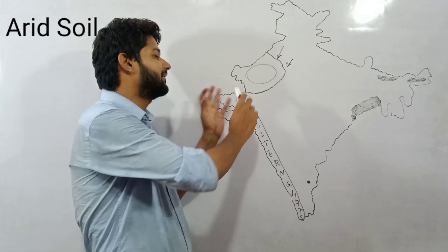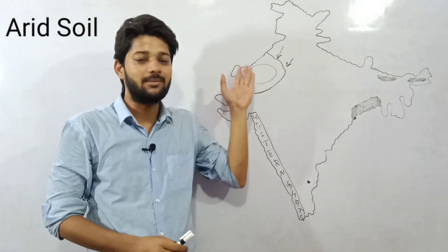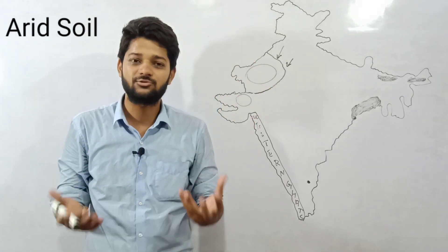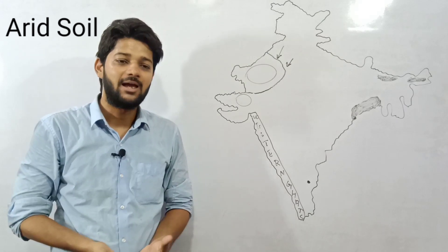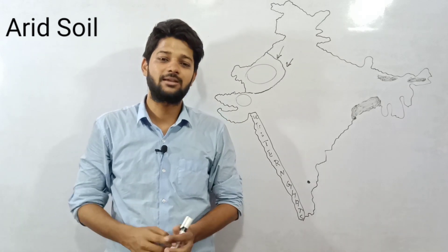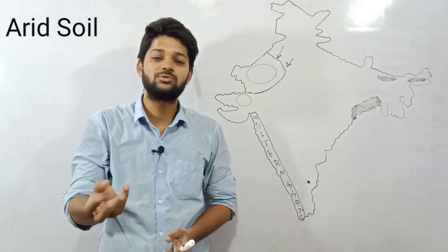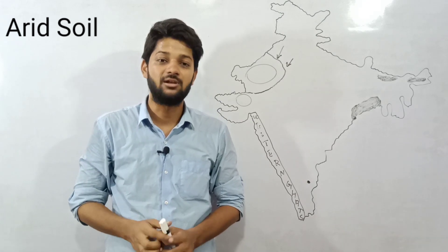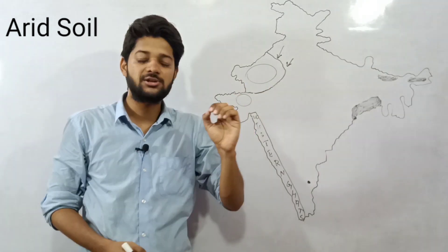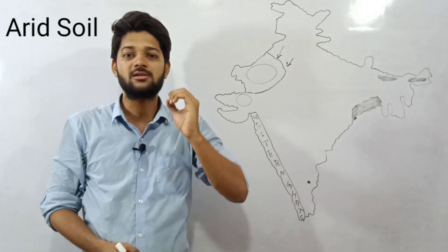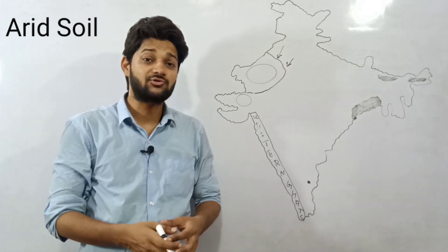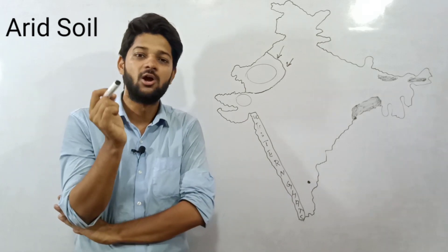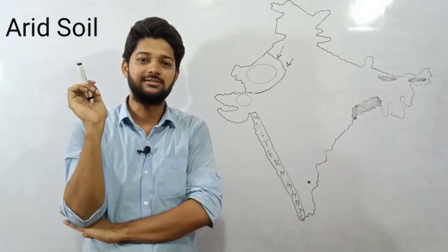In the desert, the process of evaporation is very fast. Just like water spilled at home evaporates quickly, in Rajasthan the process of evaporation happens even faster. That is why this soil has very low moisture content. And humus is also practically absent here.